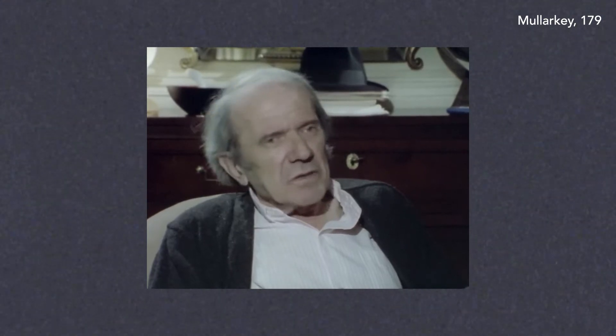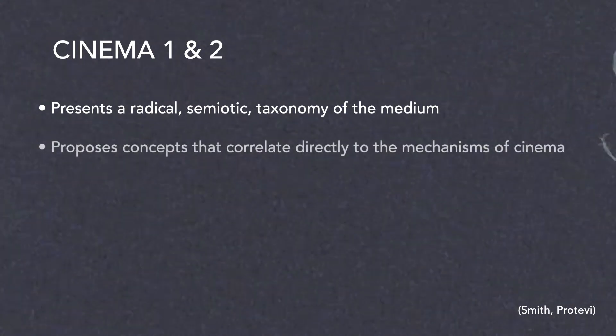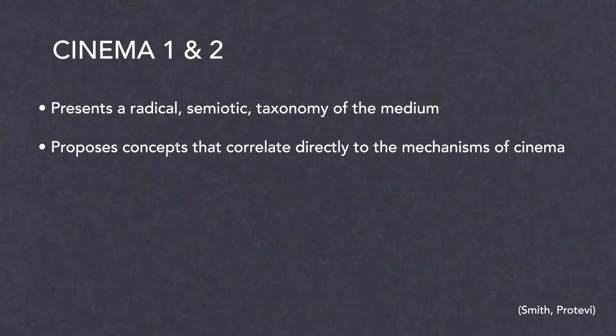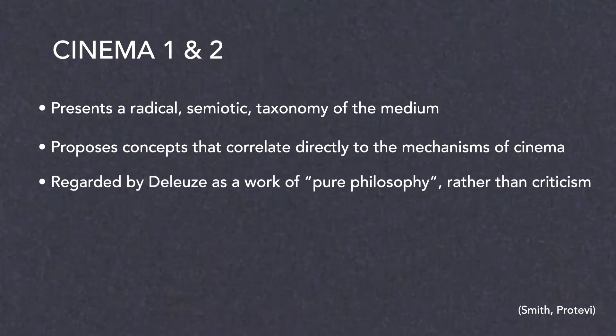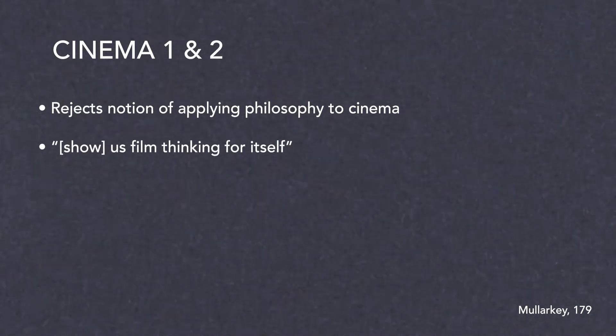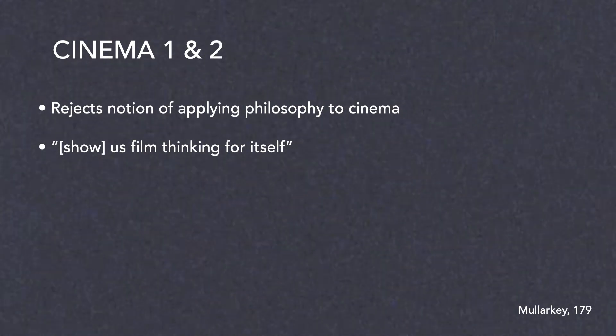His two-volume ontological study of cinema presents a radical semiotic taxonomy of the medium. In this taxonomy, he sought to develop concepts that correlated directly to the mechanisms of cinema, and regarded his writing on this topic as pure philosophy rather than criticism. However, Deleuze also explicitly rejected the notion of applying philosophy to cinema, regarding it a futile exercise. Instead, as John Malarkey writes, his cinema books show us film thinking for itself. Deleuze attempts this by proposing two distinct regimes by which cinema operates: the movement-image and the time-image. Movement and time are essential components of cinema in Deleuze's view, and relay two different representations of time.